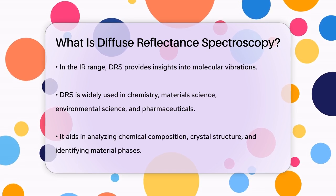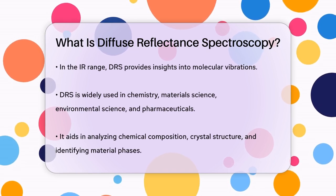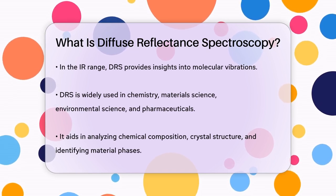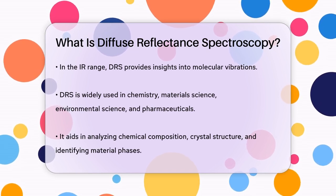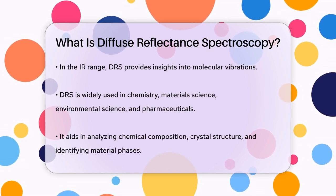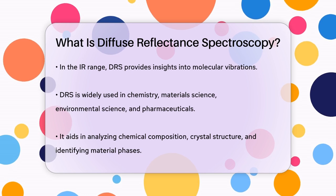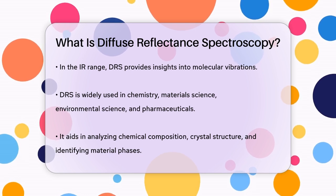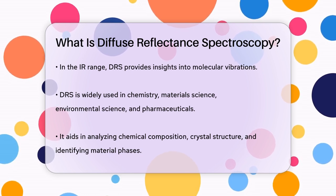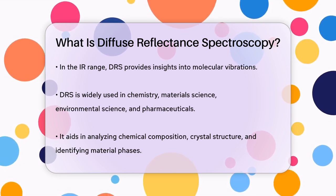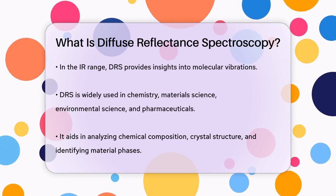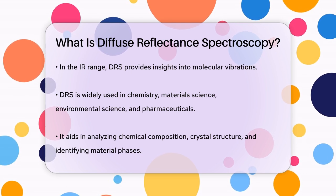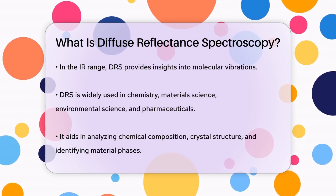DRS is very versatile and is used in many fields, including chemistry, materials science, environmental science, and pharmaceuticals. It helps in analyzing the chemical makeup and crystal structure of materials, as well as identifying material phases and monitoring chemical reactions.